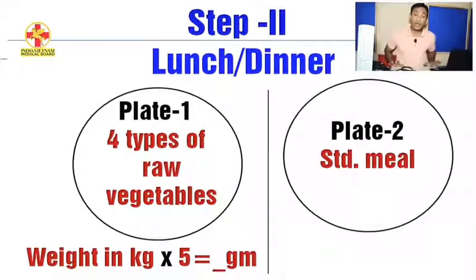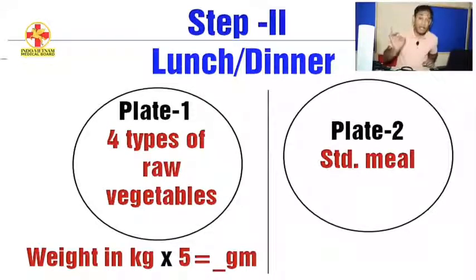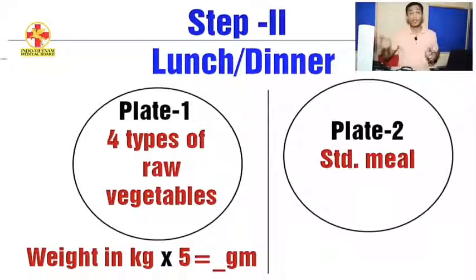How much food depends on your body weight. That is, my body weight is 70 kg multiplied by 5, which is 350 grams or more of 3 to 4 kinds of vegetables. This becomes your Plate 1.